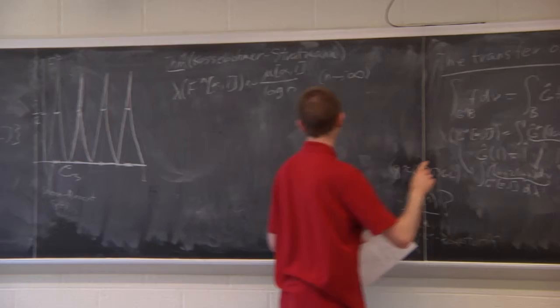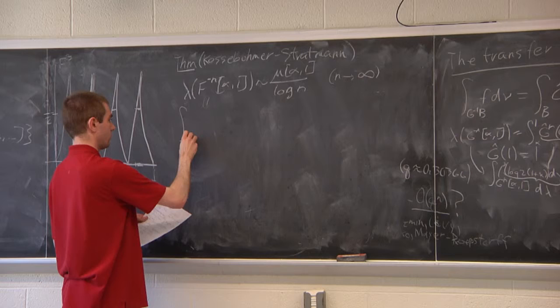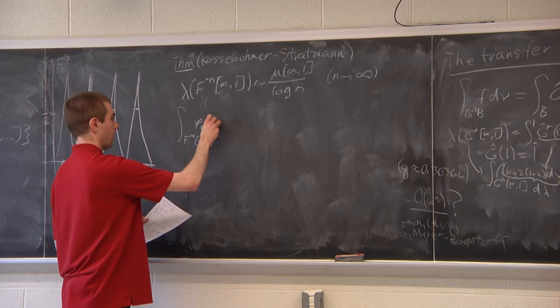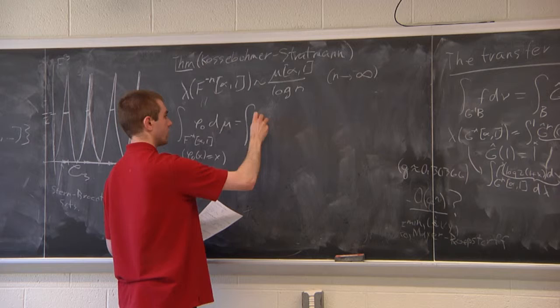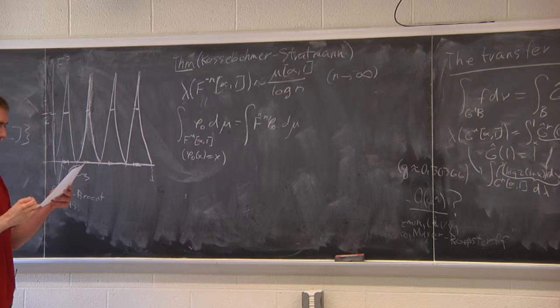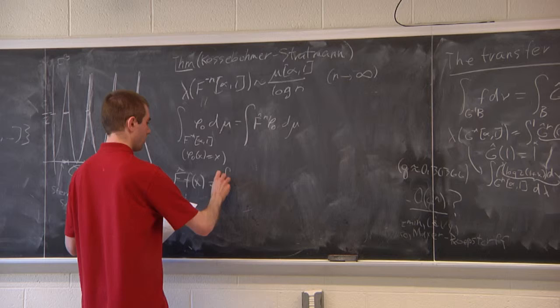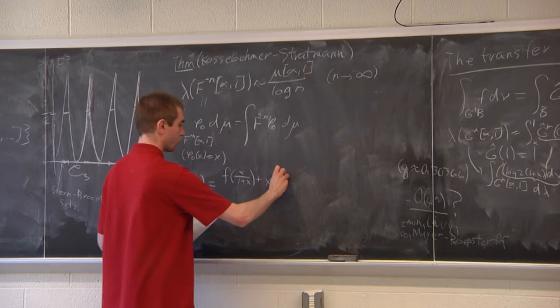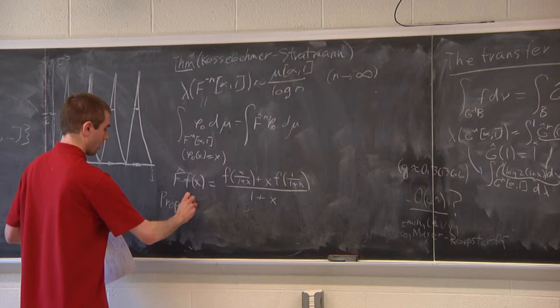The approach is analogous to how we handled the Gauss map: we consider the transfer operator f̂ of the Farey map, and rewrite the Lebesgue measure as an integral — specifically as the nth iterate of the transfer operator of F applied to φ₀ (where φ₀(x) = x) integrated against dμ. Explicitly, f̂ acts on a function as follows: f̂(h)(x) = [some explicit expression from the Farey branches].